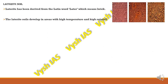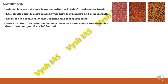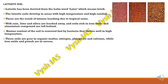Laterite soil is derived from a Latin word meaning brick. These soils develop in areas of very high temperature and very high rainfall, and they are the result of intense leaching due to tropical rains. Because of this leaching, lime and silica get leached away, and the soils become rich in iron oxide and aluminium compounds. Humus content is removed by bacteria that thrive in high temperatures. These soils are poor in organic matter, nitrogen, phosphate, and calcium, but have excess potassium and iron oxide — giving them a reddish colour.